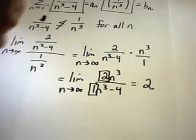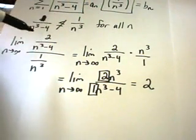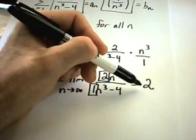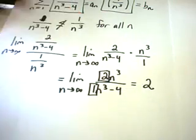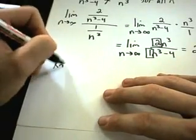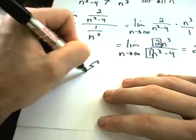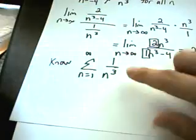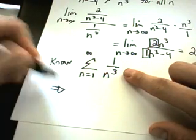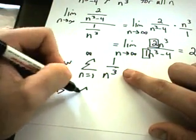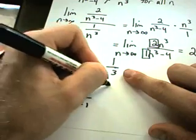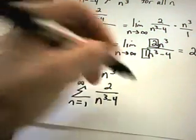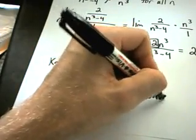The limit comparison theorem says that if the limit of a sub n over b sub n turns out to be a positive finite number, then both series do the same thing. We know that the series from 1 to infinity of 1 over n cubed is a convergent p-series. Since they both do the same thing, the original series 2 over n cubed minus 4 also converges.